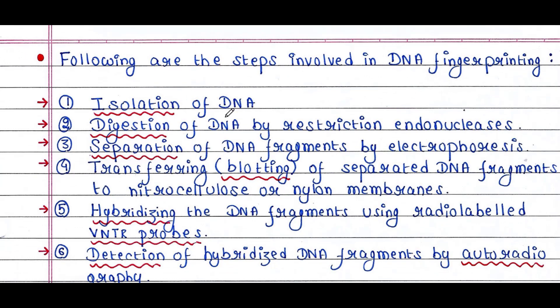The first step is isolation of DNA from the specific sample. Next is digestion of DNA by restriction endonucleases. Digestion is required to cut the DNA into small fragments, since it is very difficult to work with the entire DNA. This is followed by separation of DNA fragments by gel electrophoresis, and then transferring or blotting of the separated DNA fragments to nitrocellulose or nylon membranes.